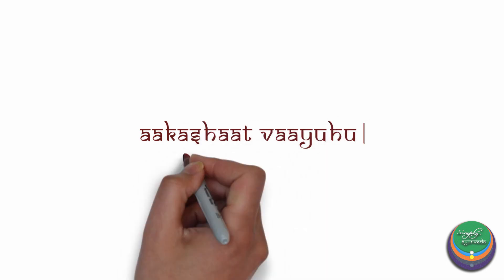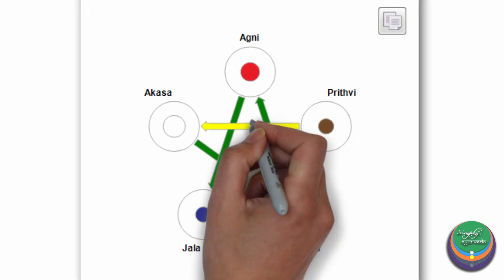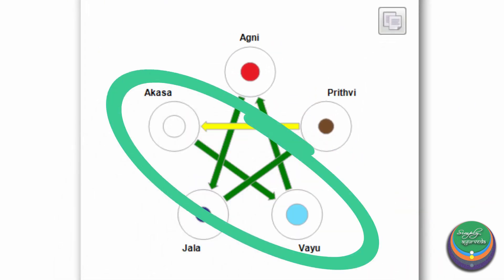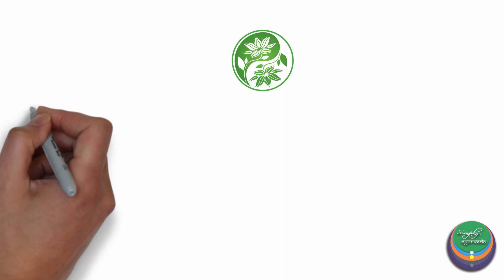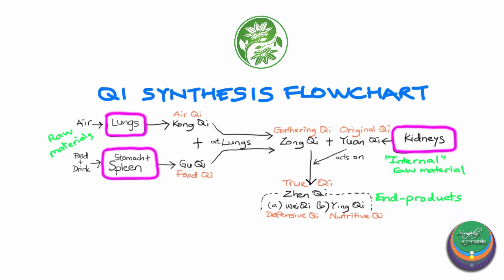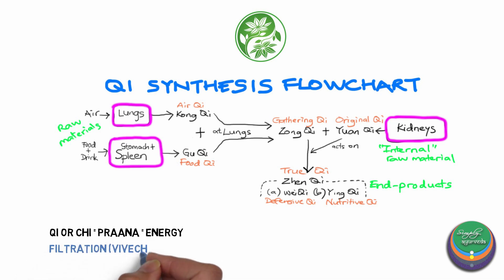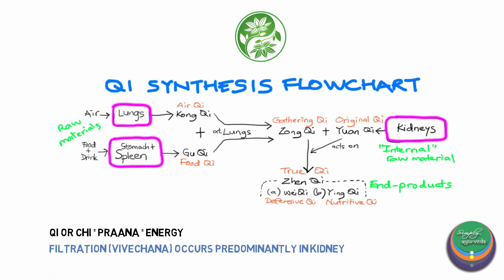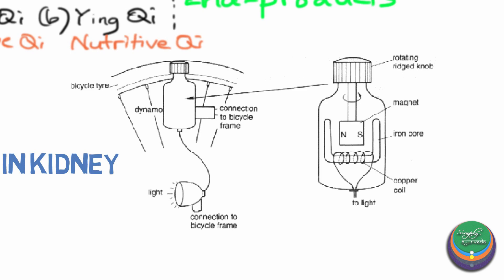As we learned in the video explaining the basics of Bhuta, according to Taithari Upanishad, Akashat Vayu — that is, Vayu originates from Akasha. It is interesting to know that in Chinese medicine, the kidney is given prime importance as the site of formation of Qi or Prana. This is understood logically considering that this is the region where the most amount of filtration or Vivechana takes place, and due to this continuous filtration, energy is produced just like in a dynamo.